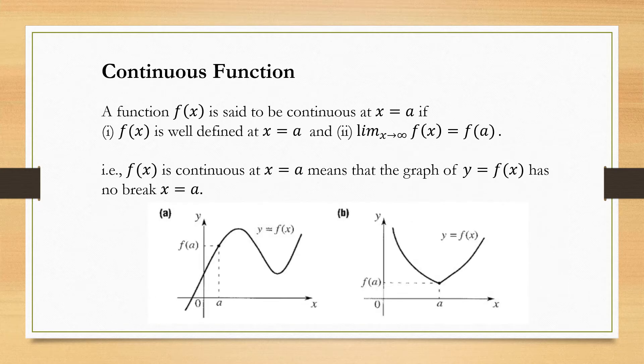At x = a, we discuss continuous functions. A function is said to be continuous at x = a if it satisfies two conditions — this is very necessary for a function to be continuous. First, f(x) is well defined at x = a. Second, the limit exists, meaning limit x tends to a of f(x) equals f(a). So f(x) is continuous at x = a means the graph y = f(x) has no break at x = a.